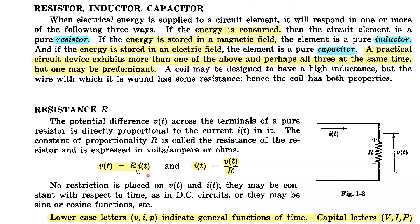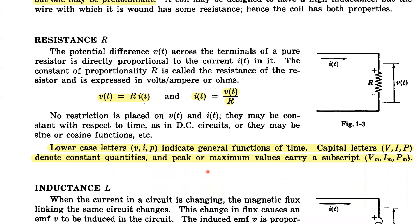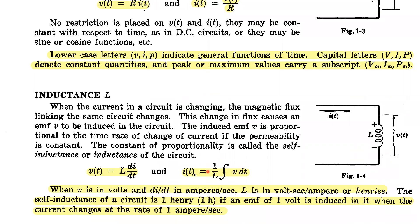For the resistor, the voltage-current relationship is V equal to IR. If current is a function of time, then voltage is obviously also a function of time. For the inductor, the voltage V is a function of di/dt — the rate of change of current with respect to time.